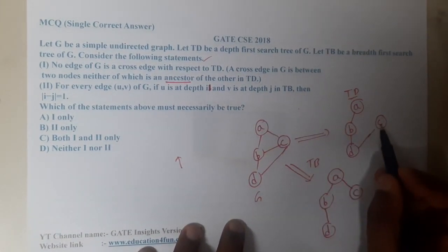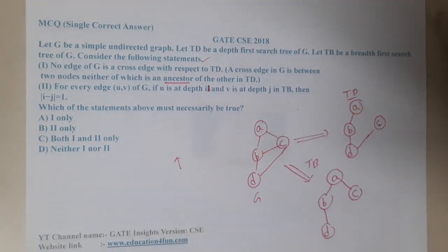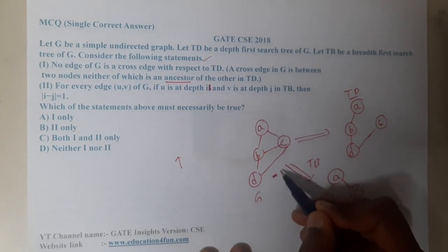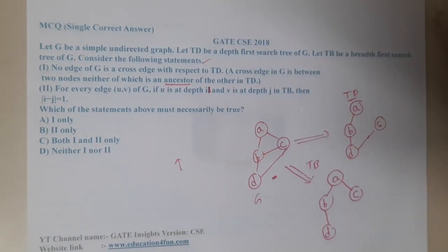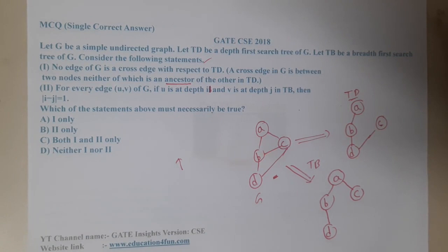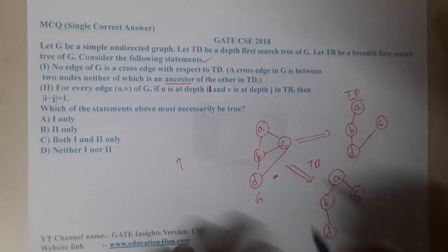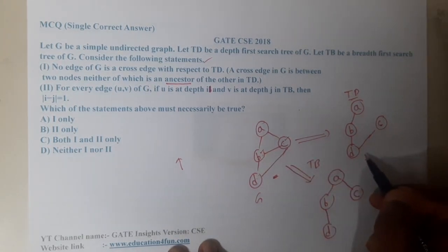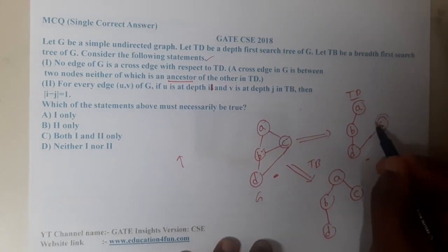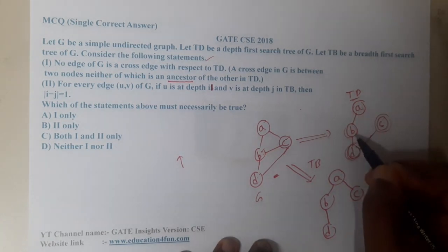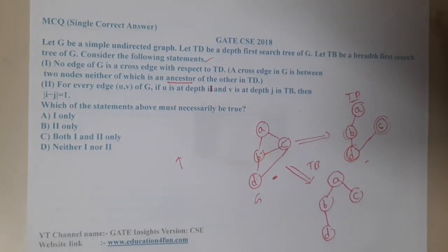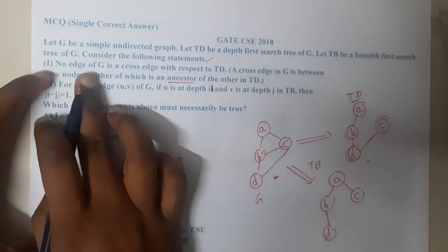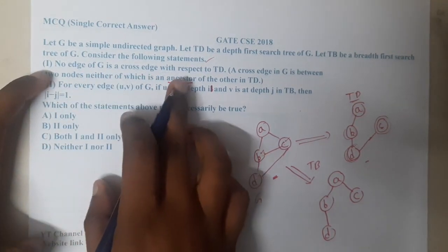If you observe carefully, the ancestors in TD: the ancestors of C are D, B, and A — everyone is an ancestor of C. Similarly, the ancestors of D are B and A. So for the edges in the graph, at least one node in each pair tends to be an ancestor of the other in TD.